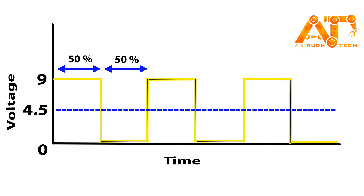Therefore the term arises: Pulse Width Modulation. The percentage of the on-time is known as the duty cycle. Here it is 50 percent on-time, so our duty cycle will be 50 percent.